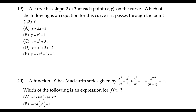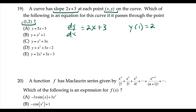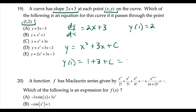Question 19: a curve has slope dy/dx equal to 2x plus 3, and the curve passes through the point (1, 2) — our initial condition y(1) equals 2. Taking the antiderivative: y equals x squared plus 3x plus c. Using the initial condition: 1 plus 3 plus c equals 2, so c equals negative 2. The full equation is y equals x squared plus 3x minus 2 — choice D.